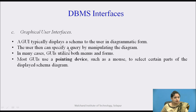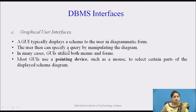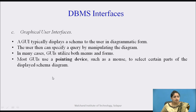Next is the graphical user interface. A GUI typically displays a schema to the user in a diagrammatic form, and the user can then specify a query by manipulating the diagram. In many cases, graphical user interfaces utilize both menus and forms. Most GUIs use a pointing device such as a mouse to select certain types of displayed schemas.